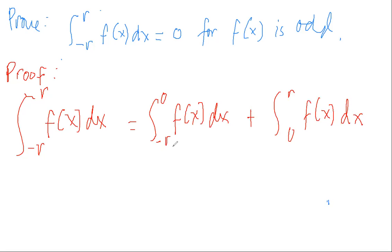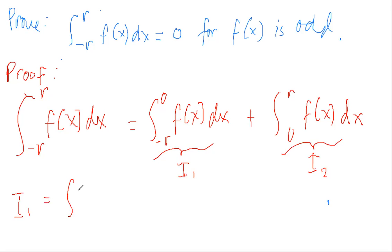In this case, we will be simplifying the first term. Let's say this is Integral 1 and this is Integral 2. So Integral 1 is equal to the integral of f(x) dx from negative r to 0.